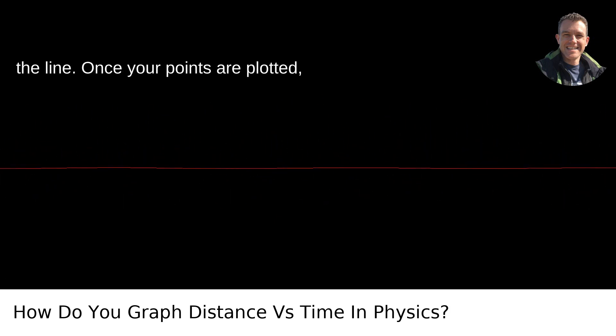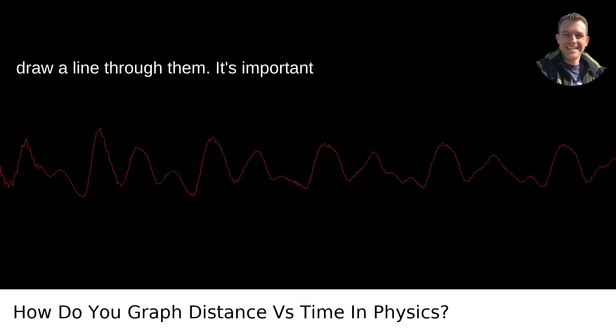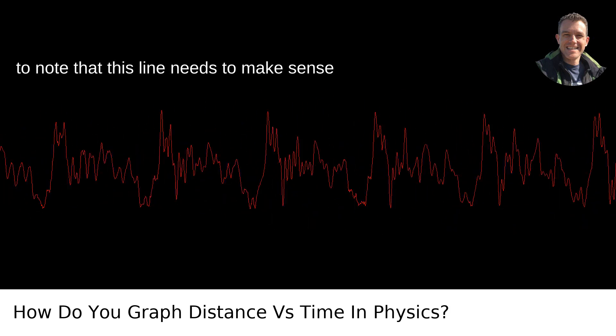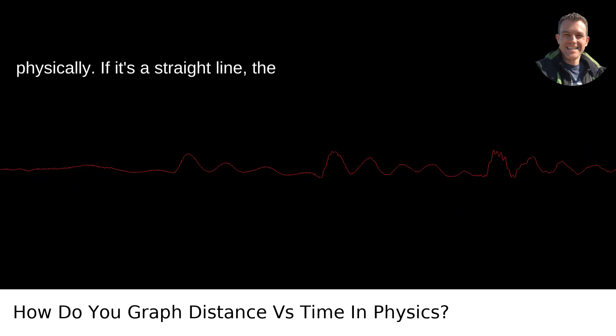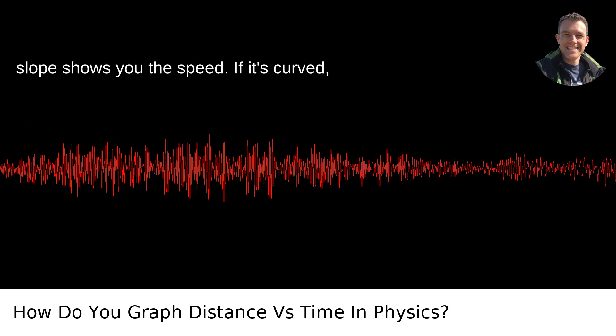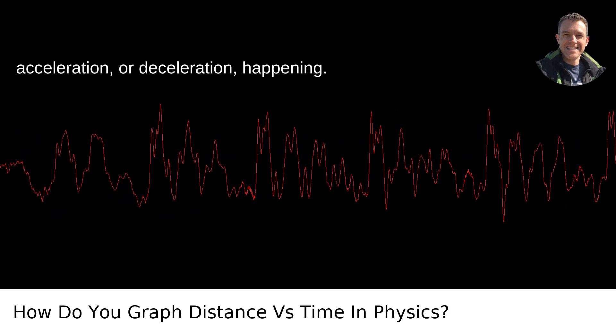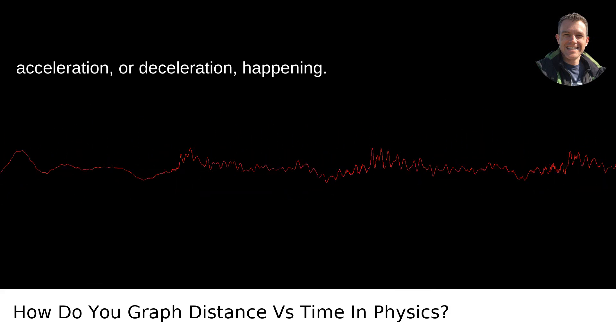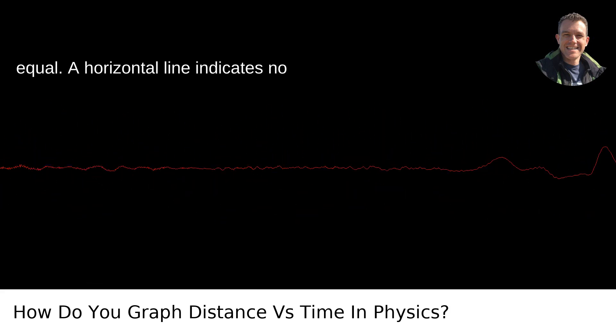Drawing the line: Once your points are plotted, draw a line through them. It's important to note that this line needs to make sense physically. If it's a straight line, the slope shows you the speed. If it's curved, it's telling you that there's acceleration, or deceleration, happening. And remember, not all lines are created equal.